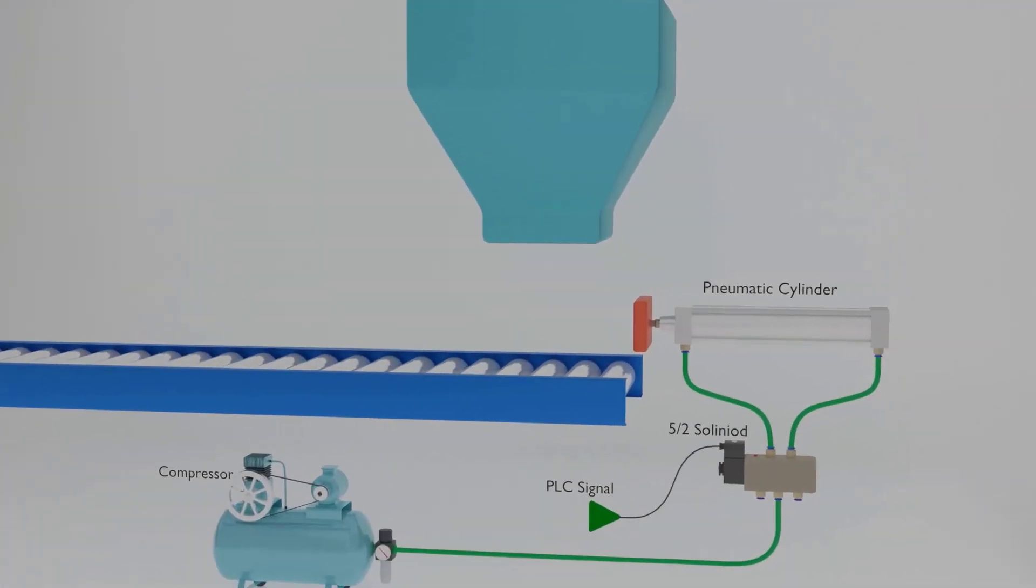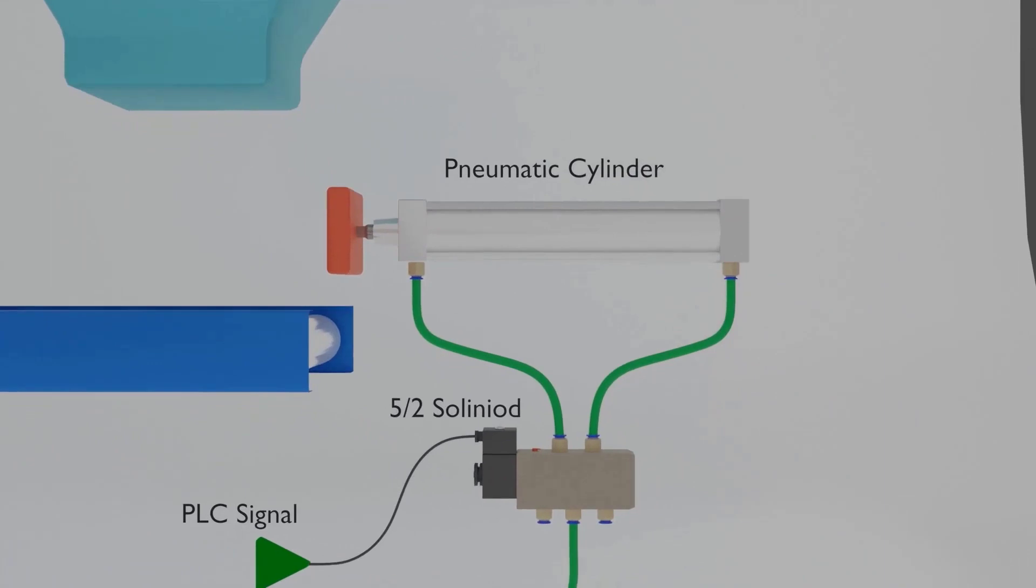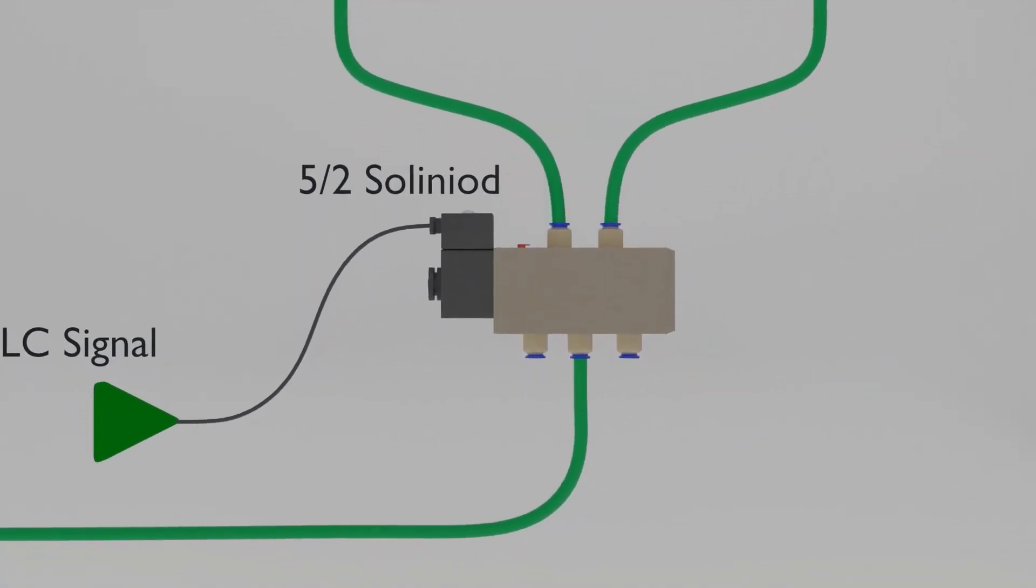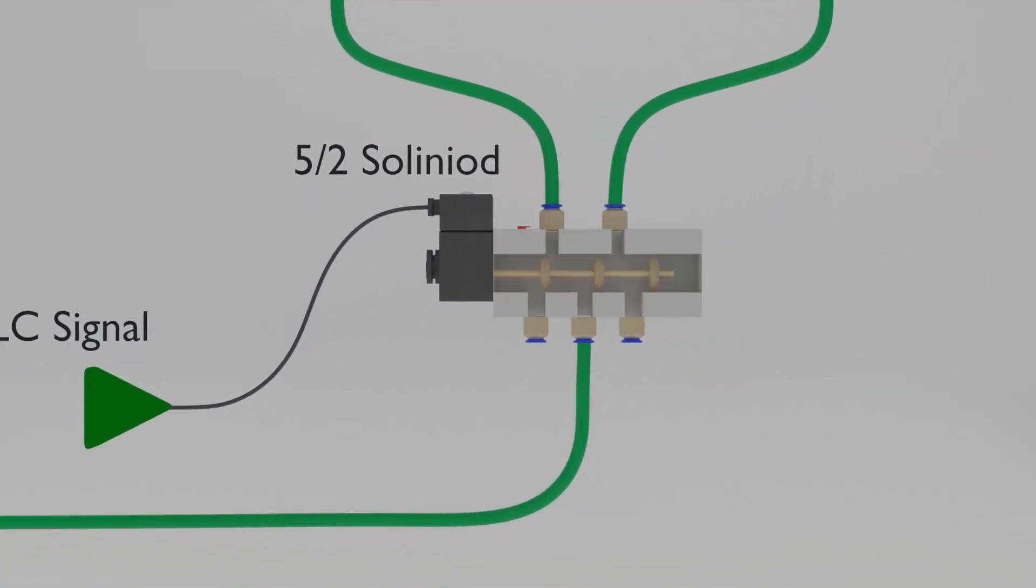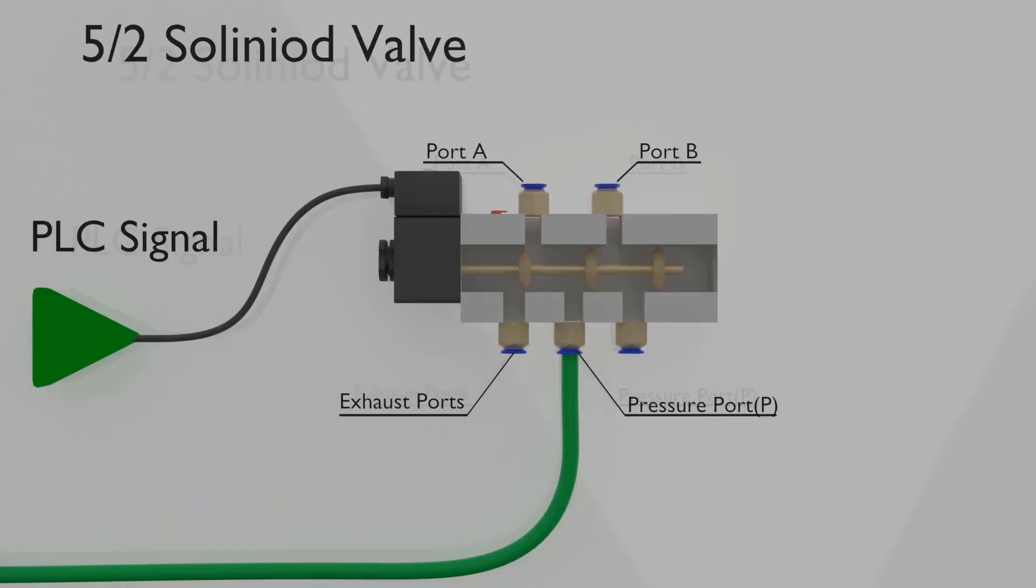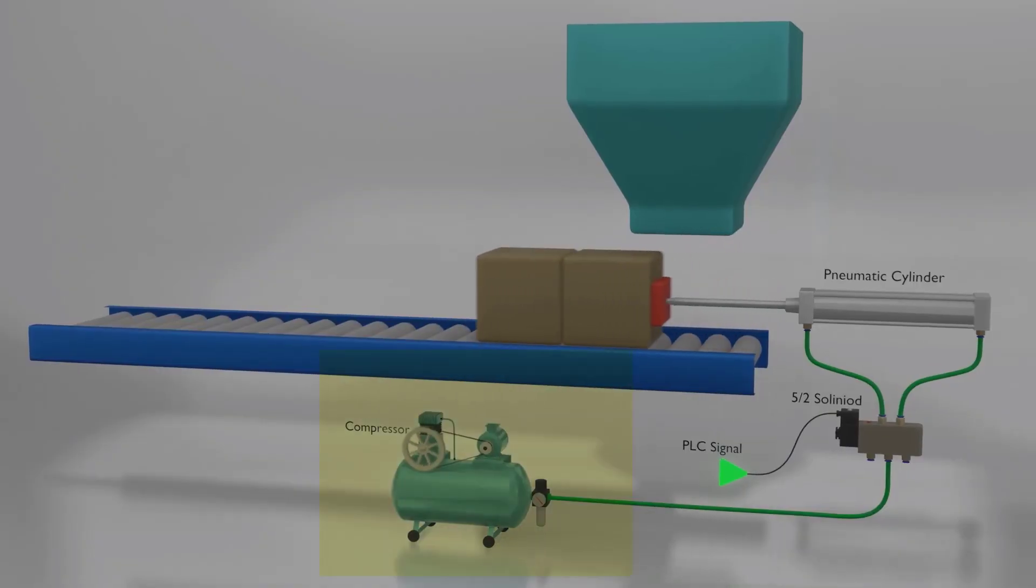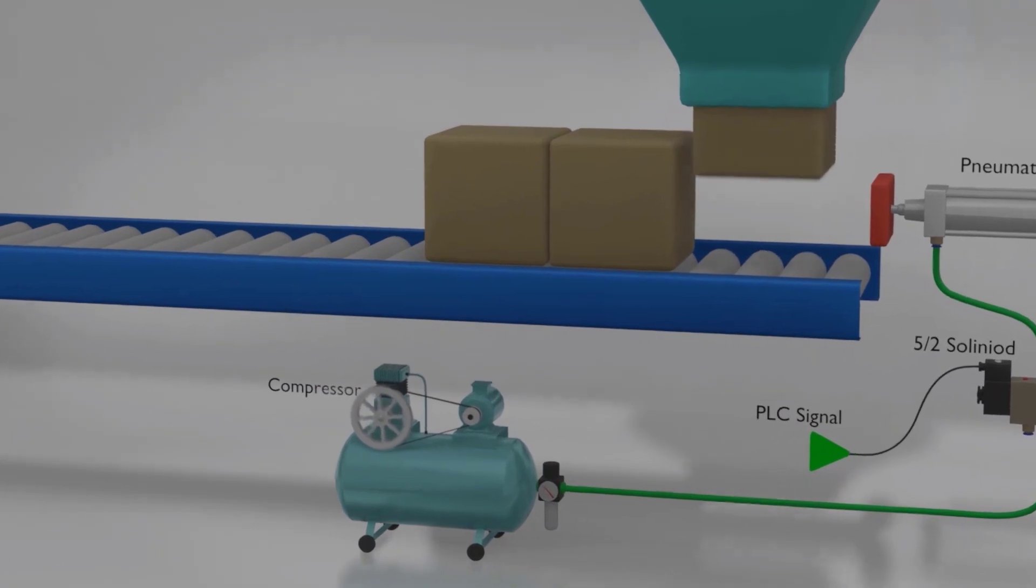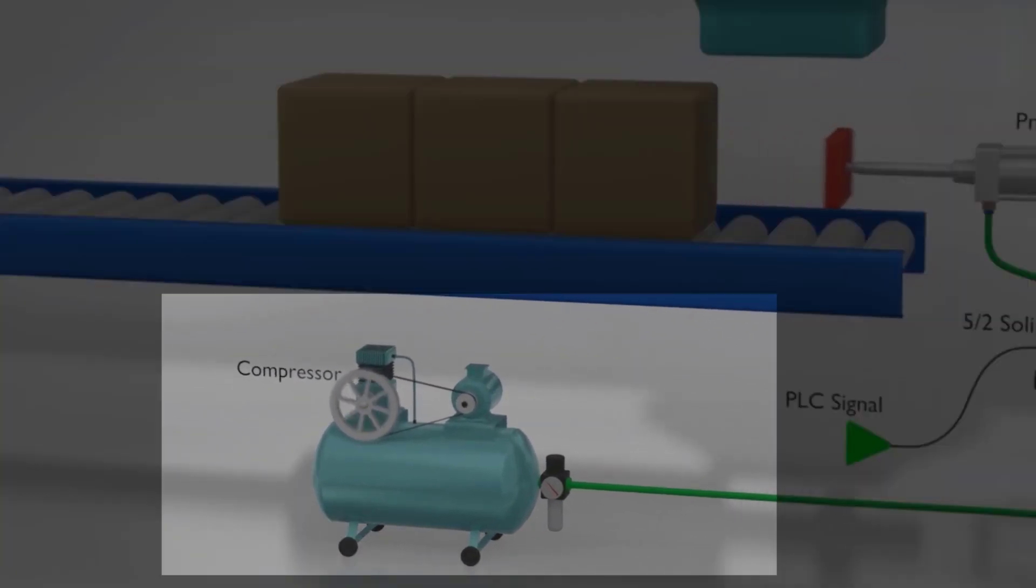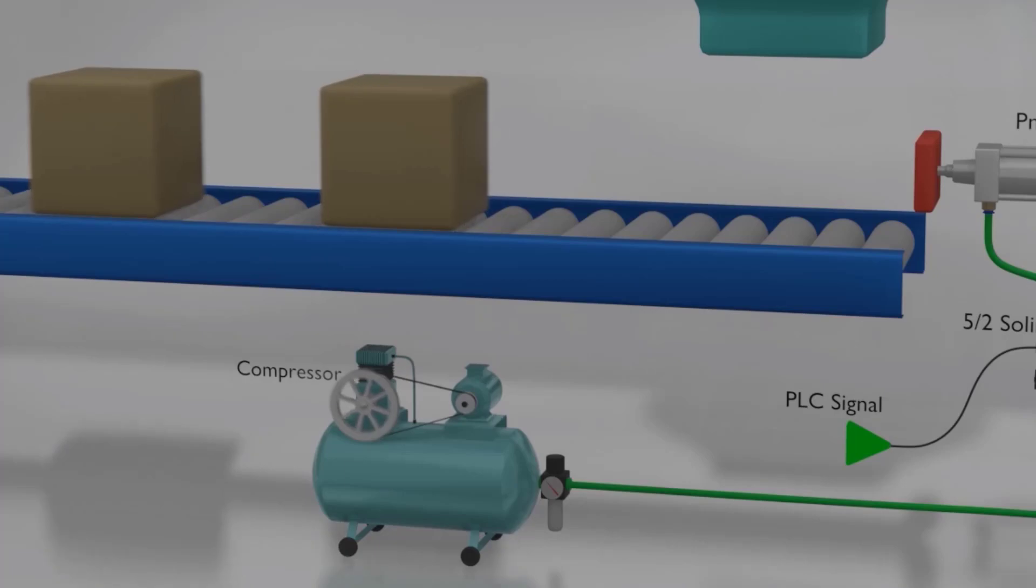Today we will discuss in detail how does a 5/2 way valve work. Stick to the end of the video to get a clear understanding about this topic. Air compressor, as you can see here, the job of that pneumatic device is to provide you pressurized or compressed air.